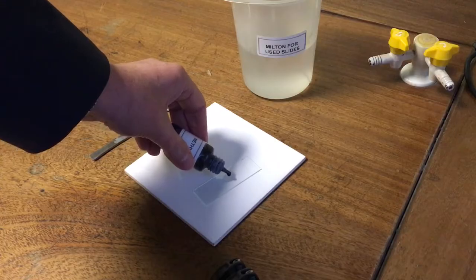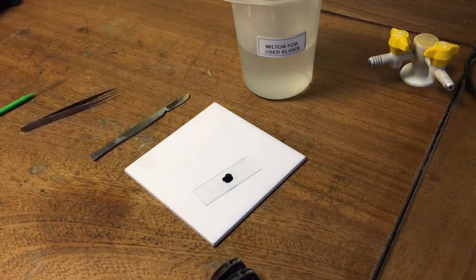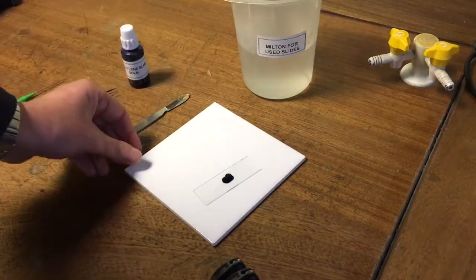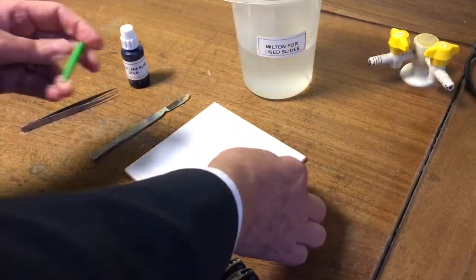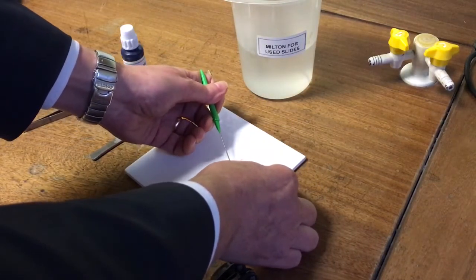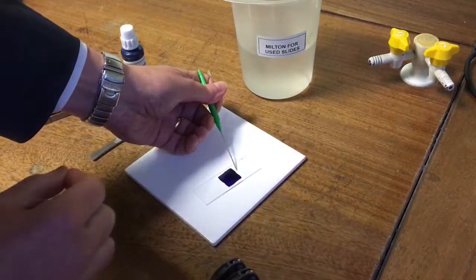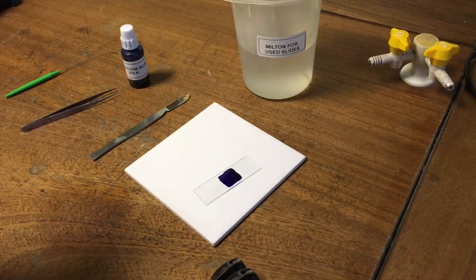I'm going to put one drop of the methylene blue onto the area where I wiped the cells. And then I'm going to gently lower a cover slip over the top of these cells so that it forms a very thin layer. I've only put a single drop of methylene blue, but that's really rather a lot on there.